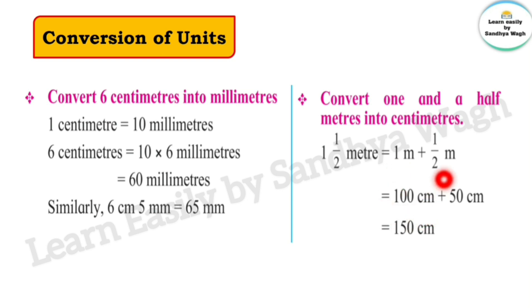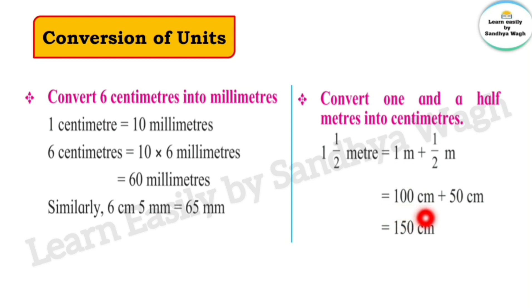Half a meter means 50 centimeters. So 100 centimeters plus 50 centimeters is equal to 150 centimeters. Therefore, one and a half meters is equal to 150 centimeters.